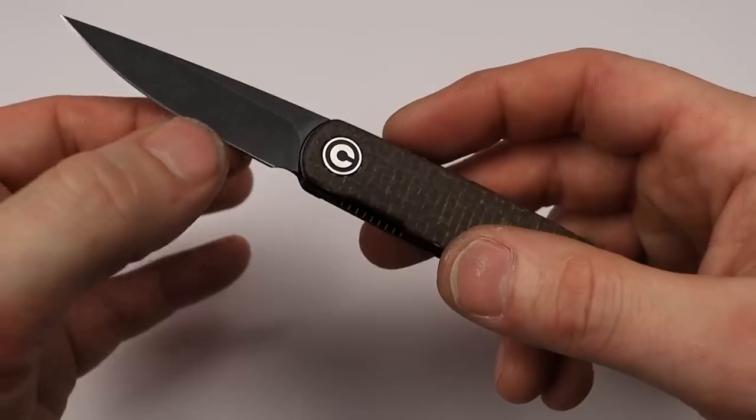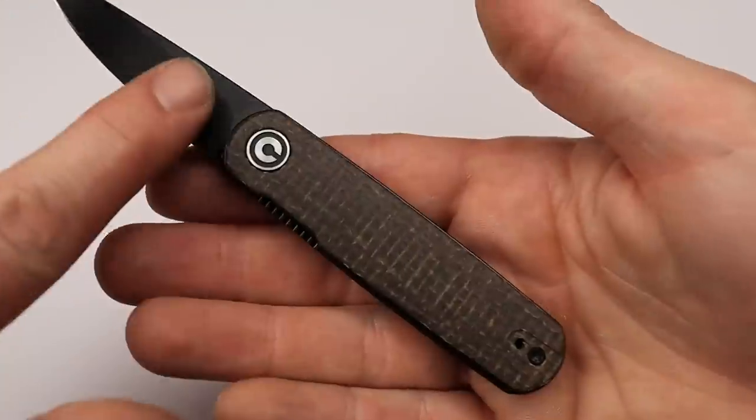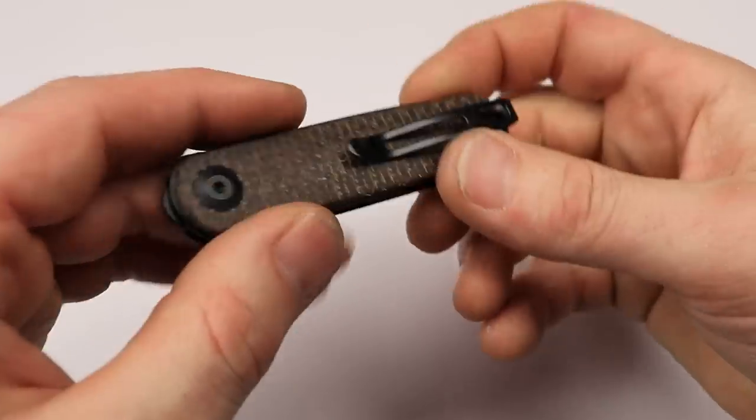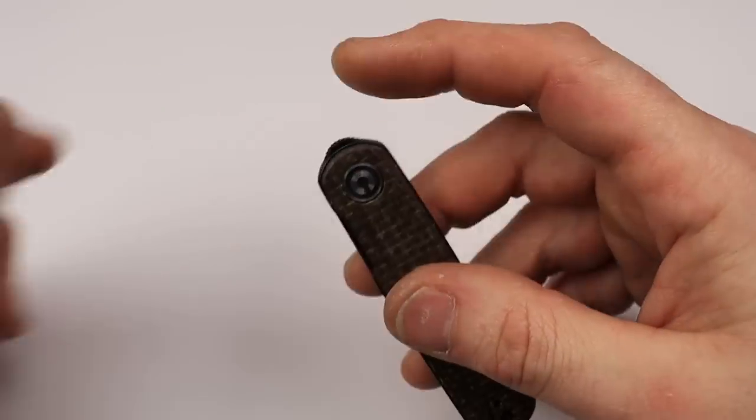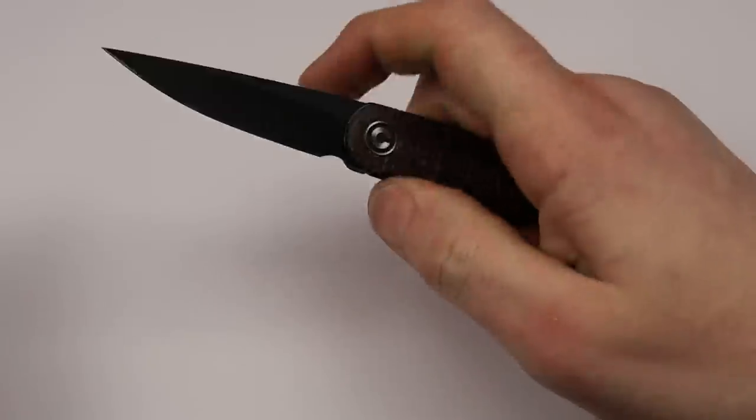Nice and pokey too. Good sharpening choil, micarta, on this example it's burlap micarta, but it does come in different options. Good access to the liner, and it has a top flipper that acts just like lighting a lighter. So if you can light a Bic lighter, you can definitely flip this.